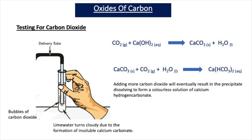Adding more carbon dioxide will eventually result in the white precipitate of calcium carbonate dissolving to form a colourless solution of calcium hydrogen carbonate, Ca(HCO3)2. You may have come across calcium hydrogen carbonate previously when studying hard water — calcium hydrogen carbonate is the cause of temporary hard water.